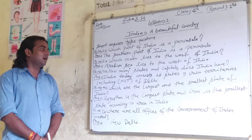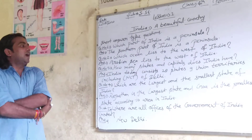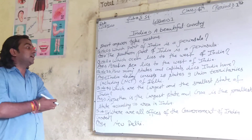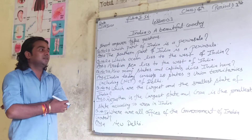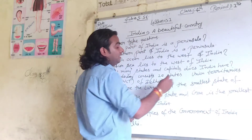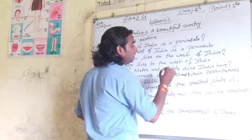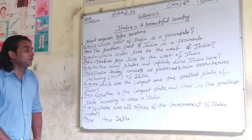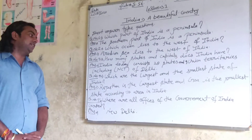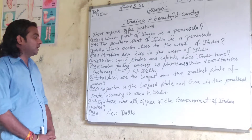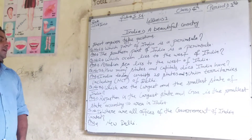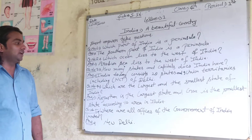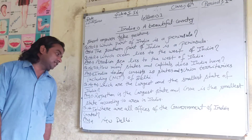Third question: how many states and union territories does India have? India today consists of 28 states and 9 union territories. Fourth question: which are the largest and the smallest states of India? The answer is Rajasthan is the largest state and Goa is the smallest state of India.